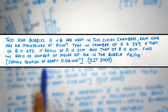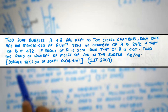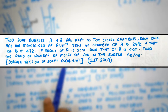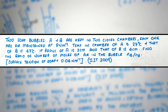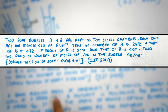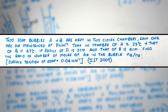We have two soap bubbles A and B which are kept in a closed chamber. Each one has been maintained with the same air pressure of 8 Newton per meter square. Temperatures in the chambers are 27 and 47 degrees Celsius. The radii are given. We need to figure out the ratio of the number of moles of air found in bubble B with respect to bubble A.